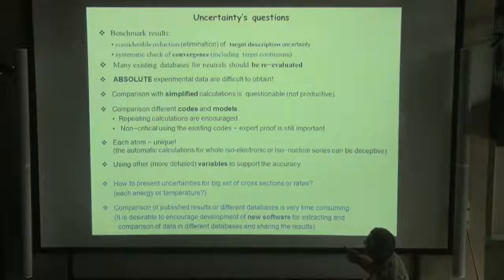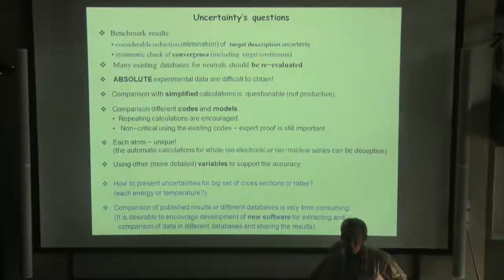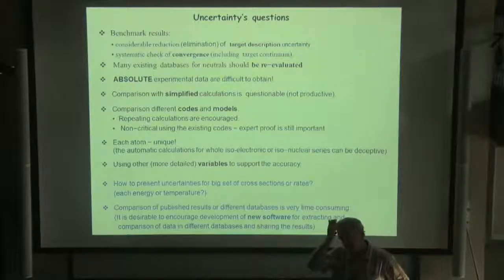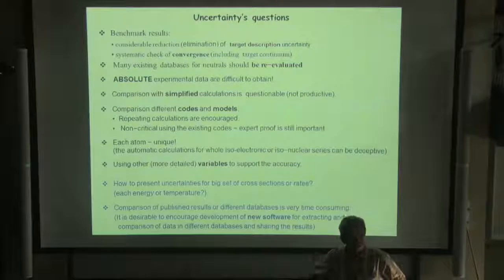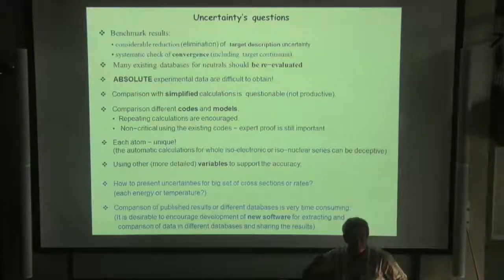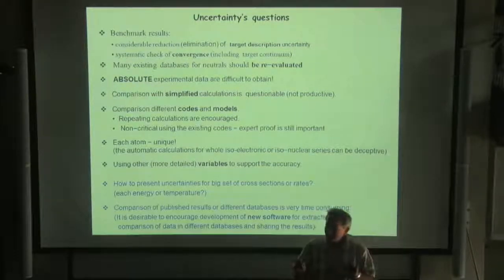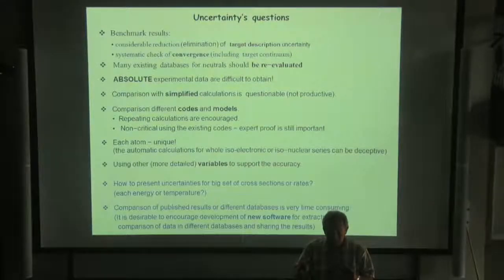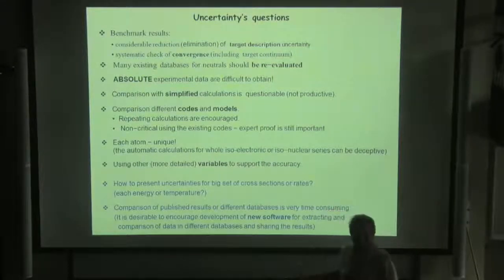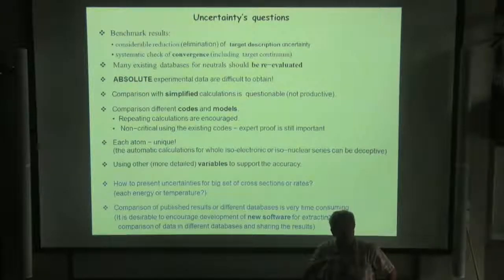Absolute experimental data are difficult to obtain. I don't concentrate on this, but we obtained many examples where, after our extensive calculation, normalization of data was changed dramatically, after a factor of 2. So my statement: experimental results should also be considered as good as it is consistent with theory. It concerns, of course, absolute values, not the relative data, which are very accurate.